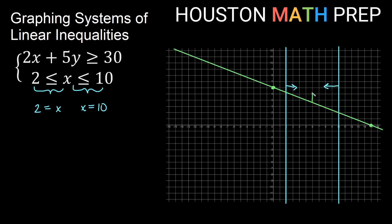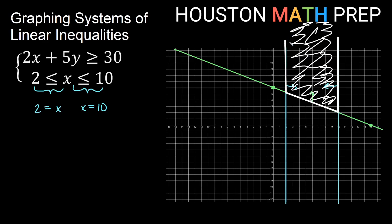I need to be between the vertical lines and above the diagonal line. What's different about this region compared to others we've done is we don't have a top keeping us boxed in. I have to be above the diagonal line and between the two vertical lines, but these lines just keep extending upward. So I can keep going up forever.